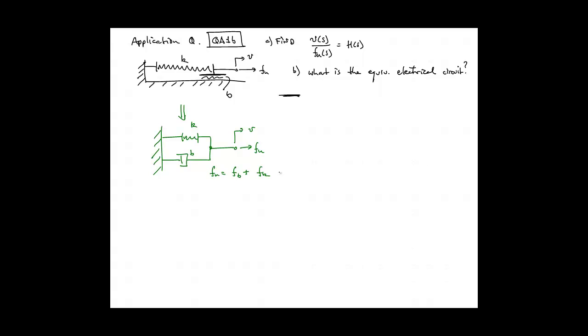And each of those forces, F sub K and F sub B, are themselves equal to their respective impedances times their respective velocities. So we have F sub U is equal to the sum of the two impedances times the velocity.